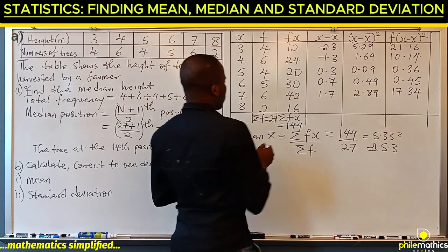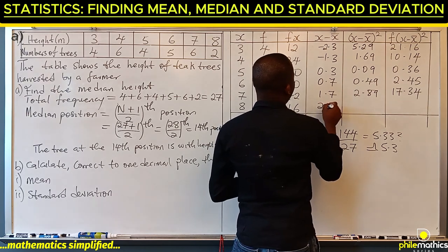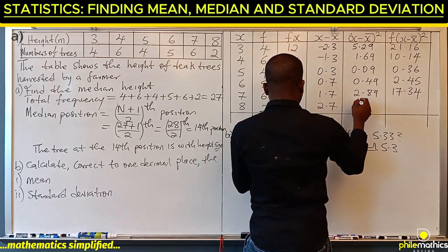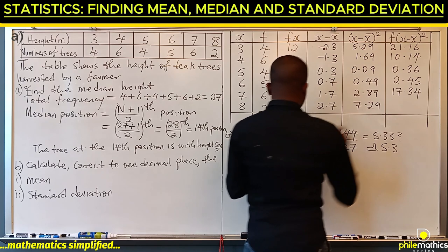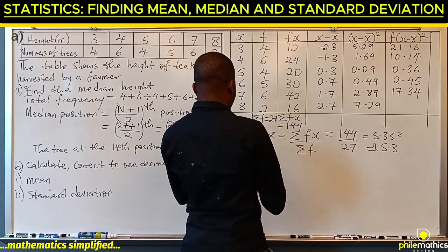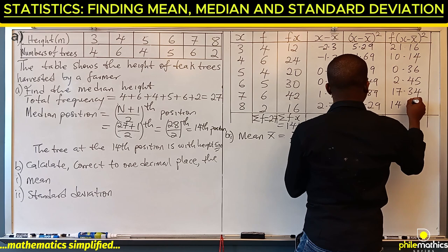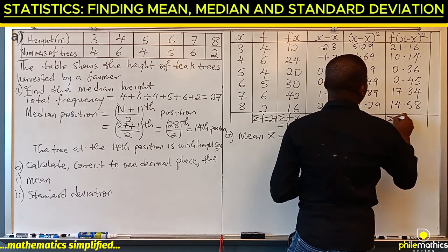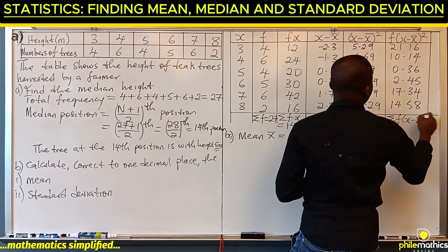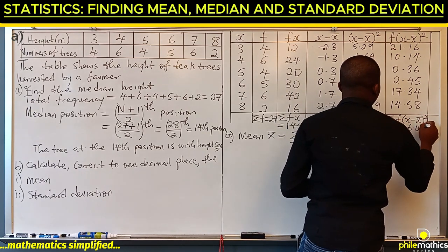Eight minus 5.3 is 2.7; squaring gives 7.29, times frequency 2 gives 14.58. Summing all the f(x minus x-bar) squared values together gives us 66.03.